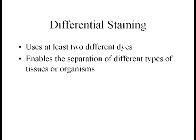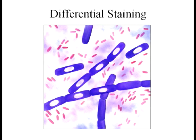The gram staining technique is a type of staining known as differential staining. Differential simply means that it uses at least two different dyes, and it enables the separation of different types of tissues or organisms. The separation is due to these different dyes, so one type of tissue would stain one color while the other tissue would stain another color. This image nicely illustrates the differential staining accomplished via the gram staining technique — some of the bacteria are stained pink or red, while the other bacteria are stained purple.